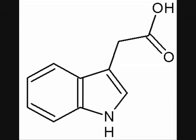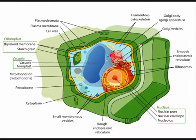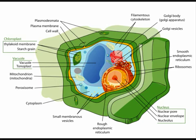Phototropism uses auxins. Auxins are plant hormones with many purposes. Here they are able to react to light and break bonds in the cell walls, making them less rigid, making the cell walls swell up and creating pressure that forces growth in a certain direction.